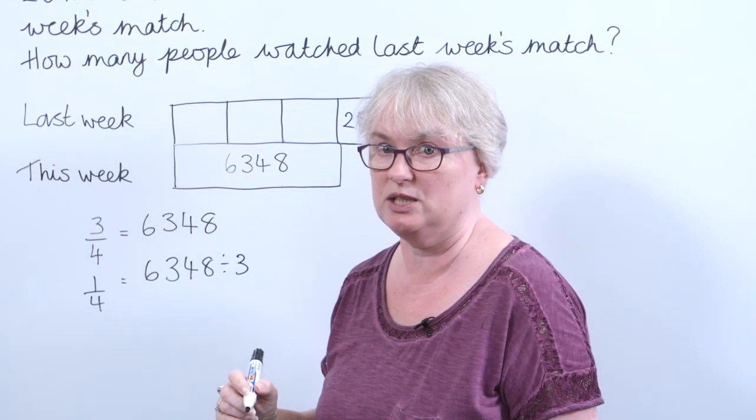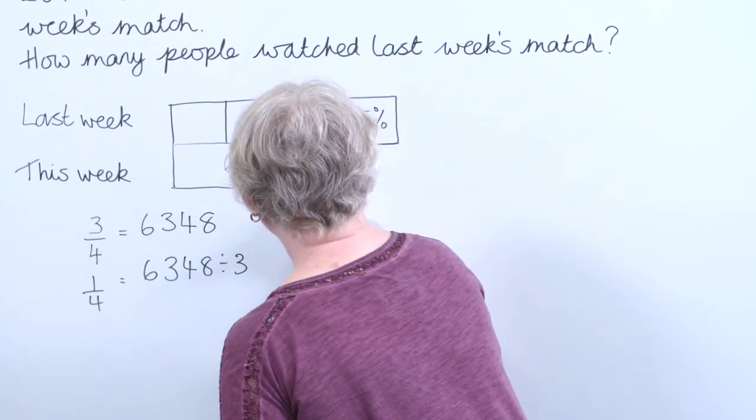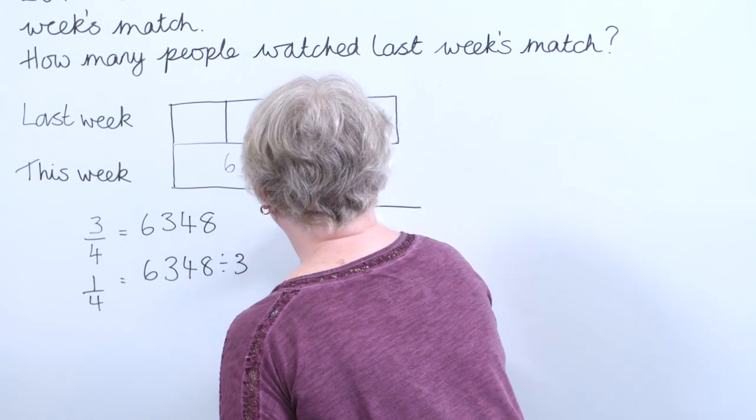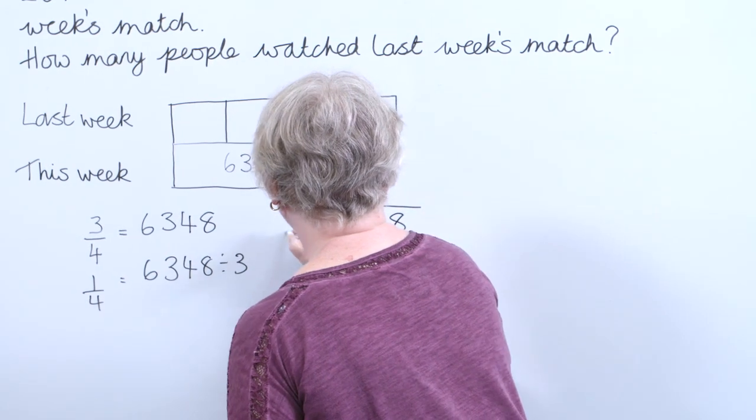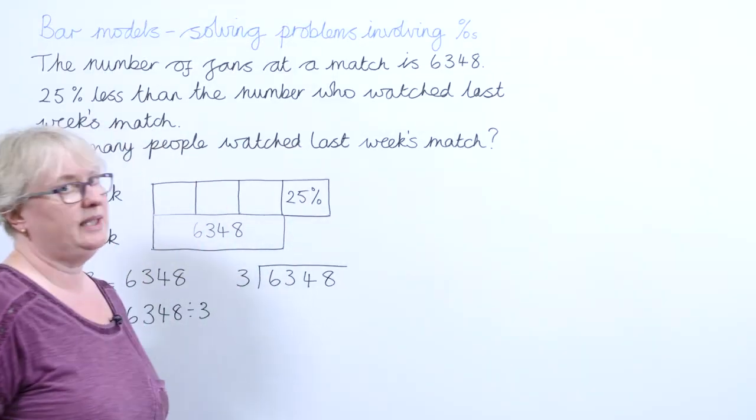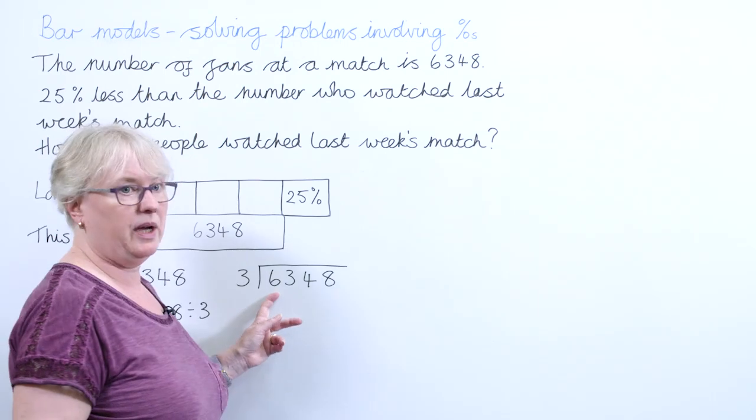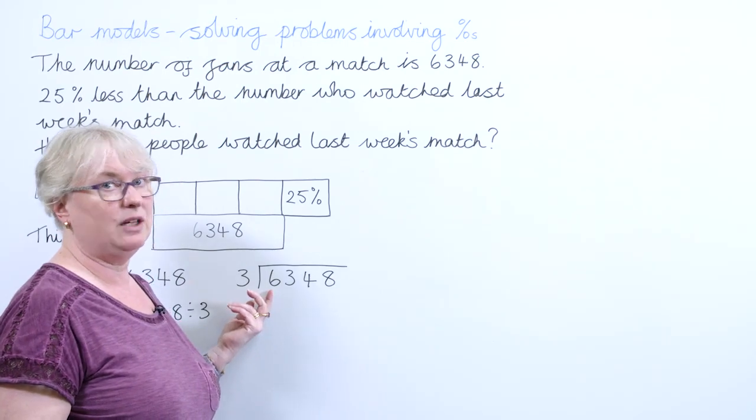I'm going to do that using the bus stop method. So to do the bus stop method, I've got 6,348 dividing it by 3. Now I always say to children, we start by the numbers at the beginning of the queue.